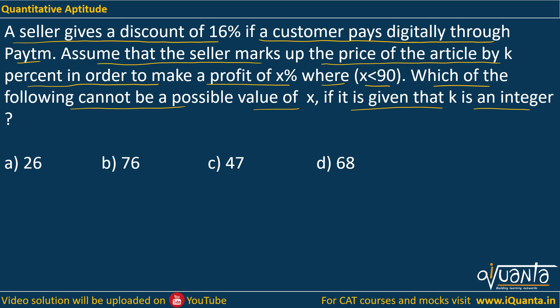So first of all, there's an article, 16% discount is provided if the customer pays digitally, and markup is k percent, profit taken is x percent. That means we can equate the selling price in both cases. Let me assume that the cost price of that article is C.